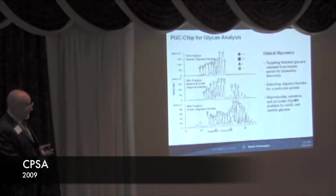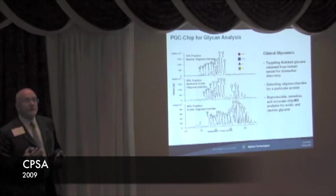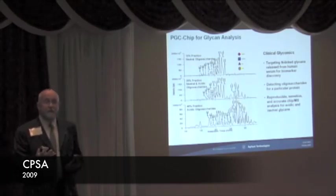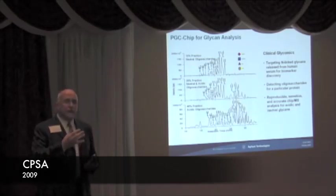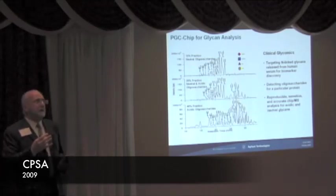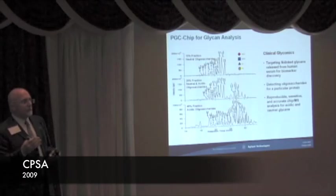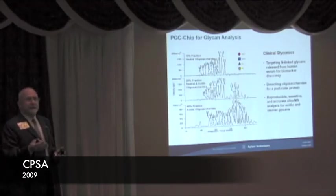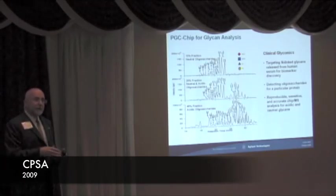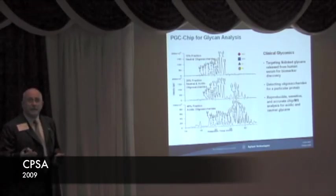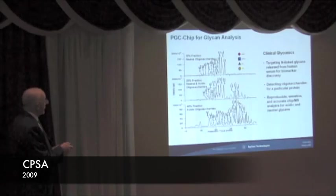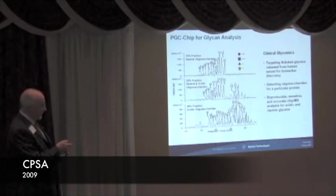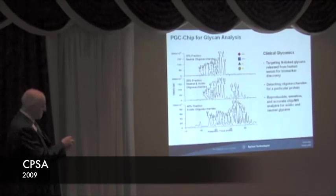We also have a porous graphitized carbon-based glycan analysis chip that does a very good job on in-solution digested N-linked glycans or O-linked glycans from antibodies for characterization with good isomeric separation.